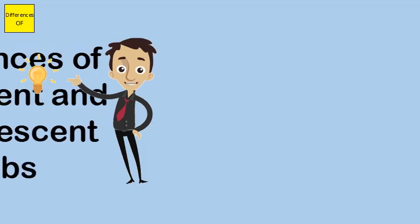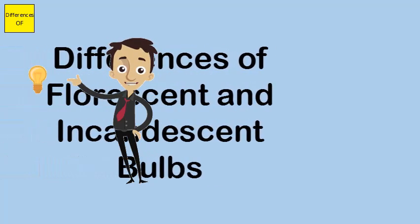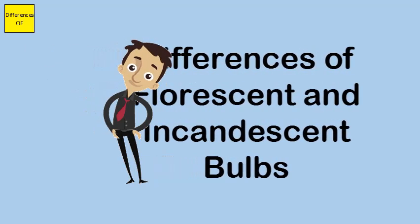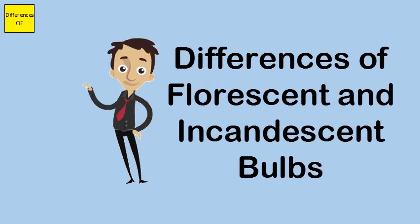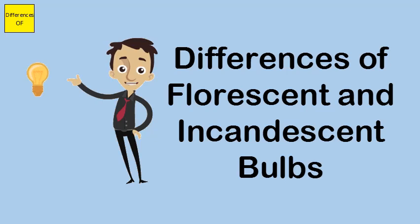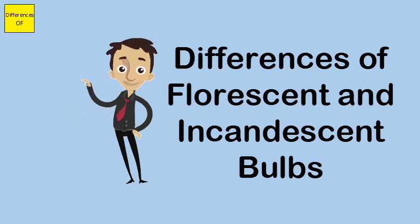Difference between fluorescent and incandescent bulbs. Fluorescent bulbs, or CFL, generate light by sending an electrical discharge through an ionized gas. Incandescent bulbs emit light by heating the filament present in the bulb.